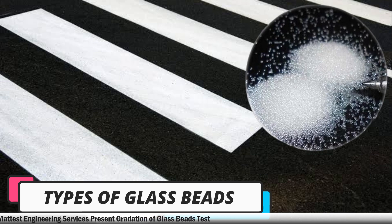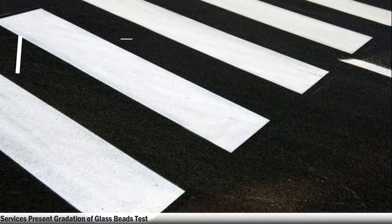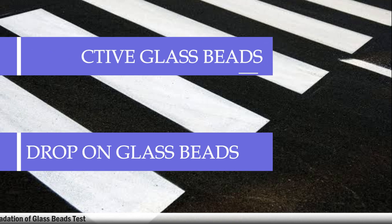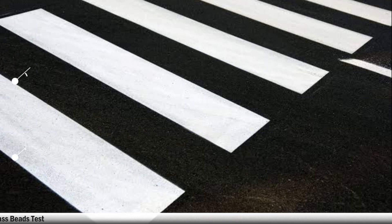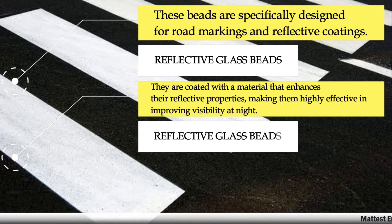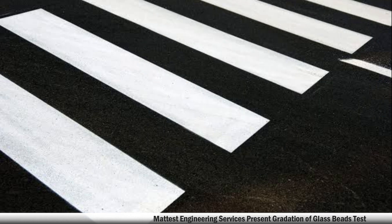There are two types of glass beads: first, reflective glass beads; second, drop-on glass beads. Reflective glass beads are specifically designed for road markings and reflective coatings. They are coated with a material that enhances their reflective properties, making them highly effective in improving visibility at night for road signs, markings, and other traffic-related applications.